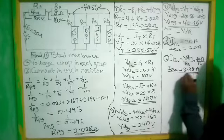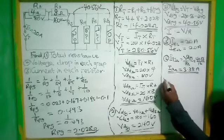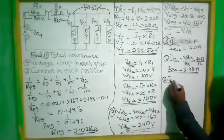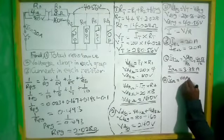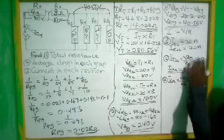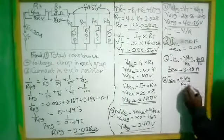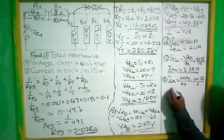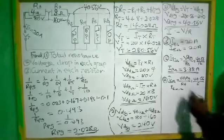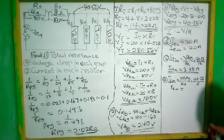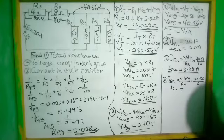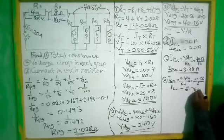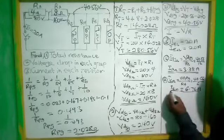Current in R4 (6 ohms) equals the voltage drop in the parallel group divided by R4. So 40.56 over 6 ohms equals 6.76 amps. This is the current in the 6-ohm resistor.